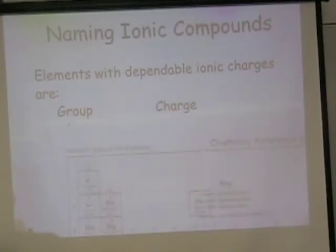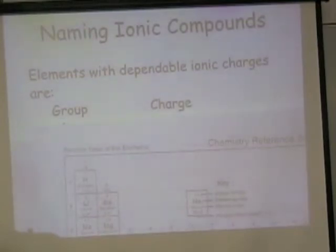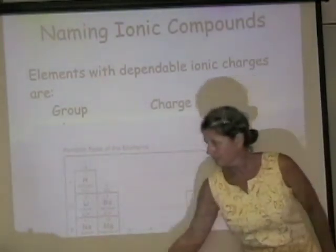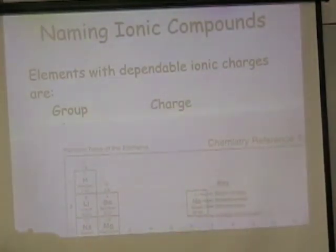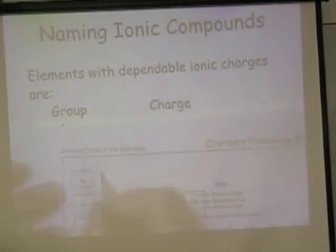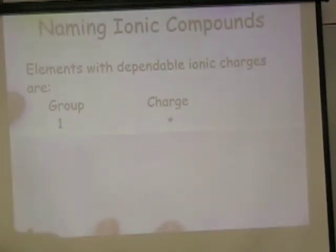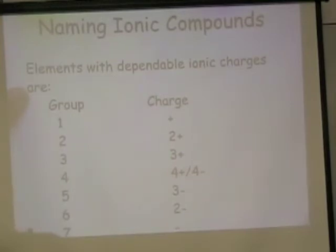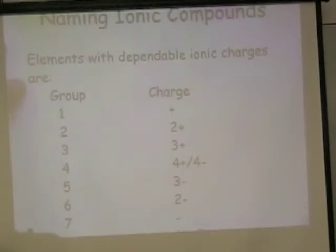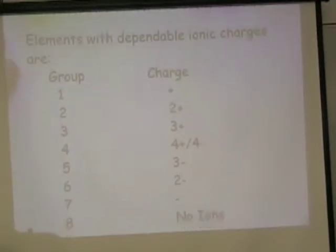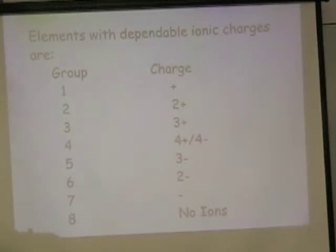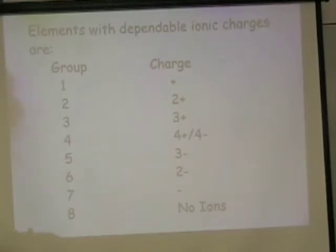So what we're going to do on the periodic table is write positive one at the top. Here are the rest — let's just look at them. Group two: they're going to lose their two valence electrons and get a positive two charge. Group three: they're going to lose their three valence electrons and get a positive three charge. Group four: well, it depends — positive four or negative four, just leave that one for now.